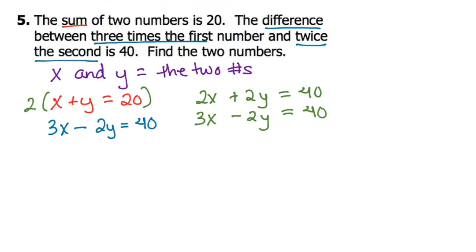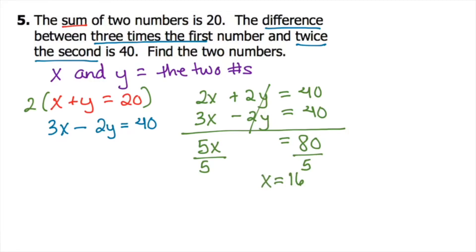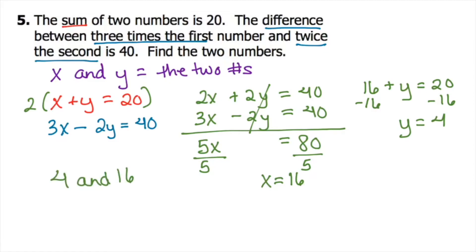Copy down the second equation underneath it. Because we have different signs we add them down: 2x plus 3x is 5x, the y terms cancel out, and 40 plus 40 is 80. Divide by 5 on both sides and you get x equals 16. Plug 16 back into the first equation: 16 plus y equals 20, subtract 16 on both sides, and you get y equals 4. So our two numbers are 4 and 16.